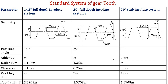For the 20 degree full depth system, the pressure angle is 20 degrees, and for the 20 degree stub system it is also 20 degrees. The addendum for the 14.5 degree system is one module; for the 20 degree full depth system it is again one module; and for the 20 degree stub system it is 0.8 module. The dedendum is 1.157 module for the 14.5 degree system, 1.25 module for the 20 degree full depth system, and 1.0 module for the 20 degree stub system.